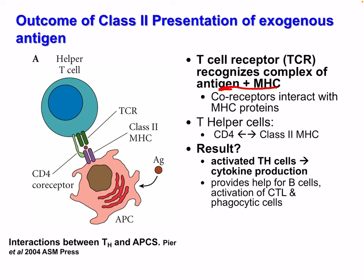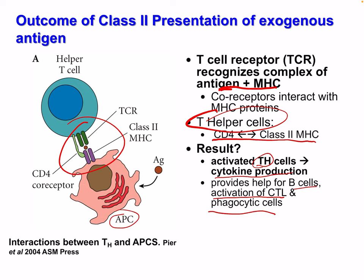The T cell receptor recognizes complexes of antigen and MHC, and co-receptors interact with MHC proteins. These are our T helper cells — CD4 binds to MHC class 2. The result is activated T helper cells, which are involved in cytokine production. This cytokine production provides help for B cell activation, activation of cytotoxic T cells, and phagocytic cells.